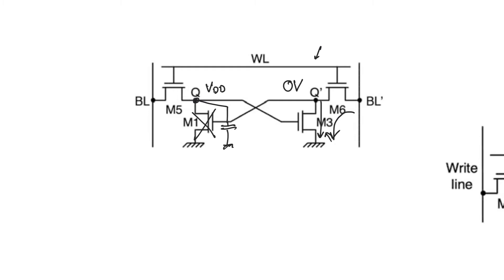Now, writing to the cell is also fairly easy. All we have to do is drive the correct values on bit line and bit line bar, the values you want to write on bit line and bit line bar, and then enable M5 and M6, which is basically the same way we did it for SRAM cells.